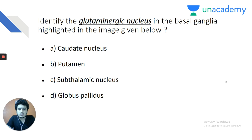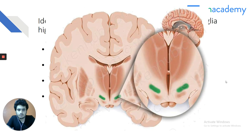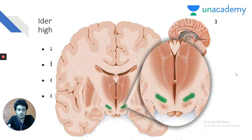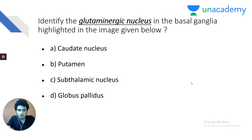Let's start with a basic question: identify the glutamate nucleus in the basal ganglia highlighted in the image. The structure highlighted in green is given with options — option A: caudate nucleus, option B: thalamus, option C: subthalamic nucleus, option D: globus pallidus.